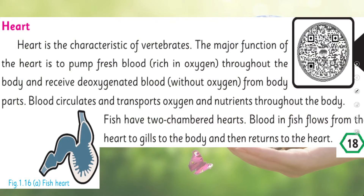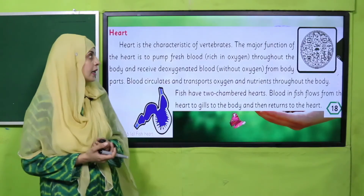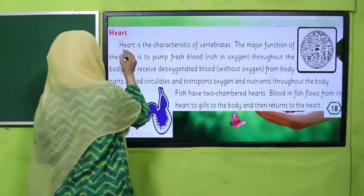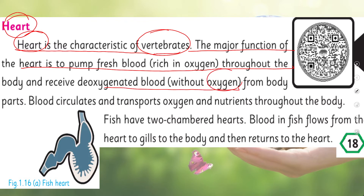Please open page number 18 in your Science 4 books. Heart is a characteristic of vertebrates — all vertebrates have a heart inside them. The major function of the heart is to pump fresh blood rich in oxygen throughout the body and receive deoxygenated blood — rich with carbon dioxide — from the body. Blood circulates and transports oxygen and nutrients throughout the body.